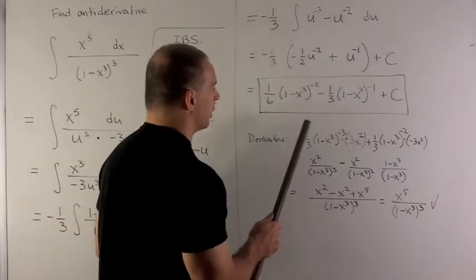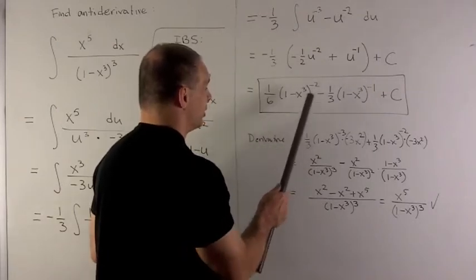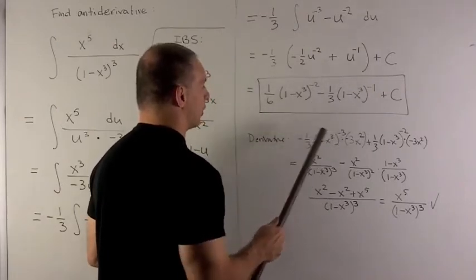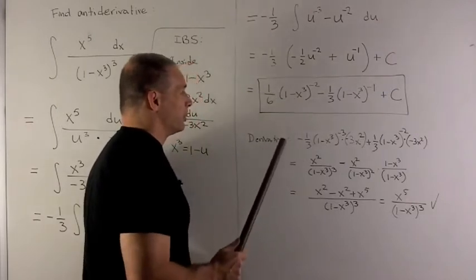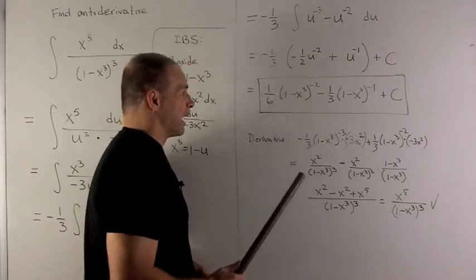So what we're doing here is bring that down, gives me minus 1 third, subtract 1 off that gives me a minus 3. And then chain rule says multiply by derivative of the inside which is minus 3x squared.